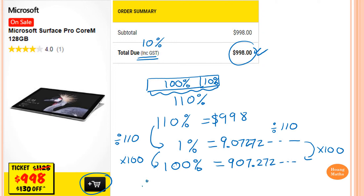So therefore, the price before GST is $907. And because we deal with money, so it's two decimal places. The digits after are 72, and the one after that is 2, which is less than 5, so the answer is 27. So the price before GST is $907.27.